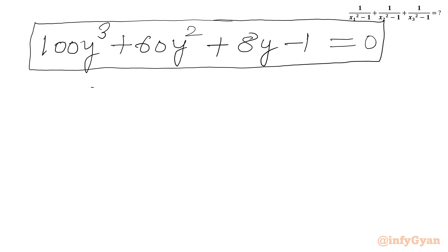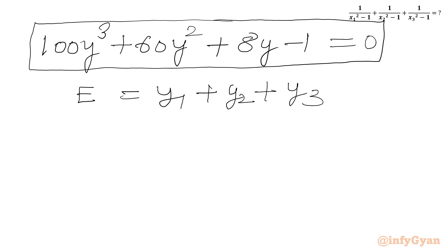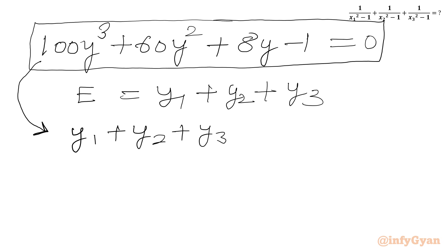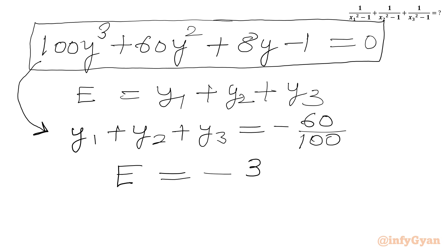Our required expression is y1 plus y2 plus y3, which is the sum of roots. Using Vieta's formulas on the cubic 100y³ + 60y² + 8y - 1 = 0, the sum of roots equals minus the coefficient of y² divided by the coefficient of y³, which is -60/100 equals -3/5. So our final answer is -3/5.